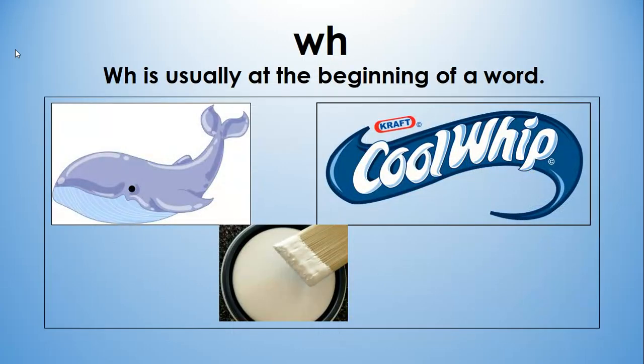WH is usually at the beginning of words, and we say wh. Saying wh and actually pronouncing that H sound at the end would not be incorrect, but usually when we're speaking, we just say whale, white, whip.